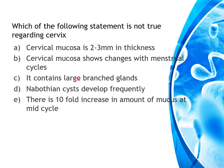Which statement is NOT true regarding the cervix? Cervical mucosa is 2–3 mm in thickness — true. Cervical mucosa shows changes with the menstrual cycle — false; it does not show cyclic changes. It contains large branched glands — true. Nabothian cysts develop frequently — true, formed when gland ducts are blocked. There is a tenfold increase in mucus at mid-cycle — true, to facilitate sperm movement. The answer is option B: cervical mucosa shows changes with the menstrual cycle.